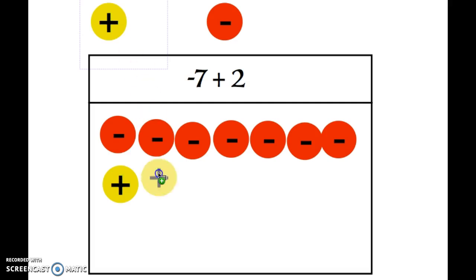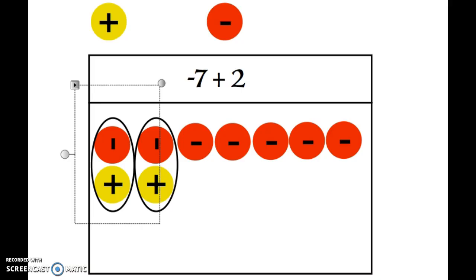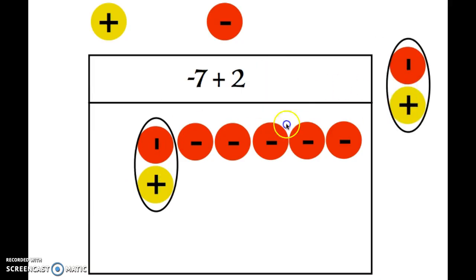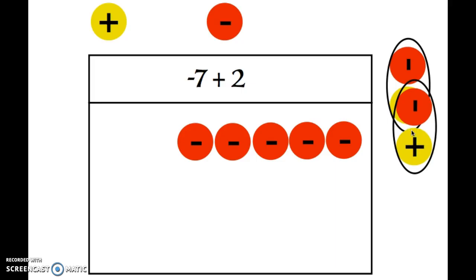Okay, I can't just obviously tell what's there, so I need to use my idea of zero pairs and zero out everything that I can. And again, it looks like I've got a zero pair here and a zero pair here, so I'm going to pull those guys off the board. I'm zeroing out. Notice we have five reds left. That means negative 7 plus 2 is negative 5.